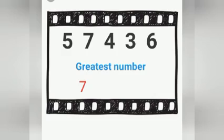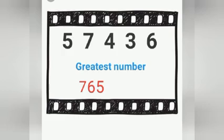The next number which is smaller than seven? Yes, very good. Six. The number which is smaller than six? Yes, very good. Five. And the digit which is smaller than five is? Yes, very good. Four. The number which is smaller than four is? Yes, very good. Three. Therefore, the greatest five-digit number is seventy-six thousand five hundred and forty-three.